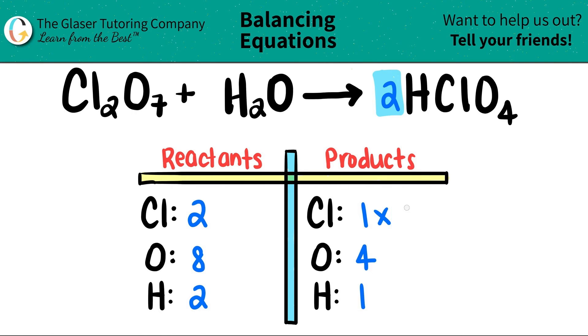But now, when you put a coefficient, you have to be fair. You have to get all of the elements a different number. So the H, the Cl, and the O are going to change. Now you have 2 hydrogens. You have 2 Cls, which is what we wanted. And then you have 2 times 4 oxygens, which are now 8. So I'm going to get rid of that 4, and I get an 8.